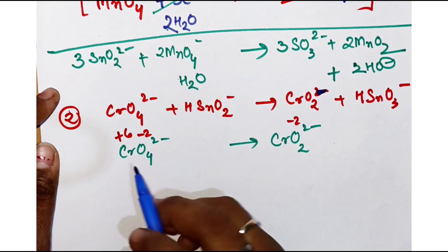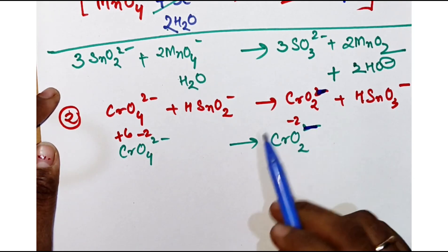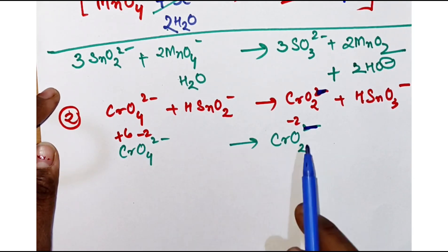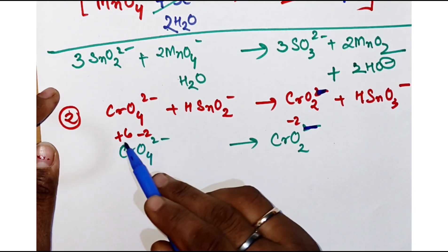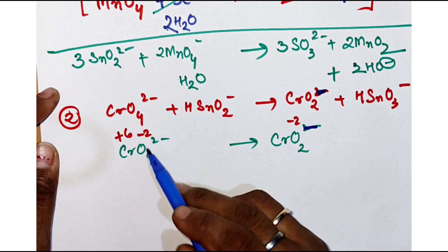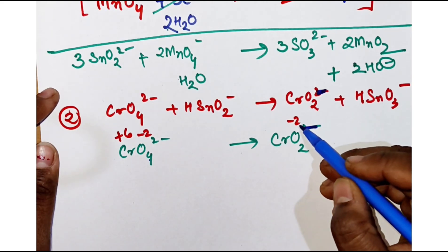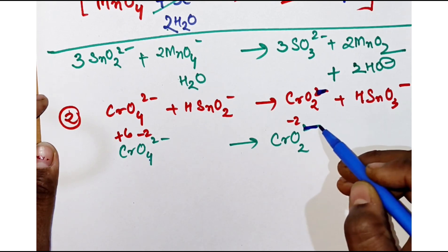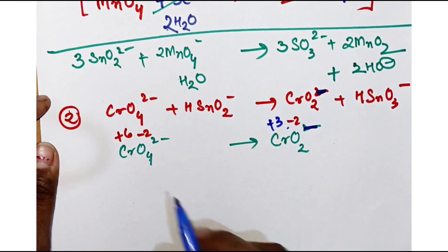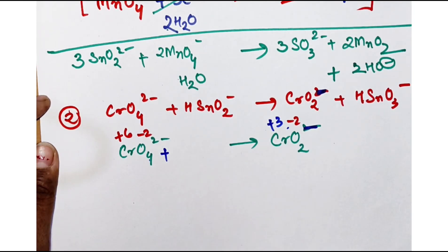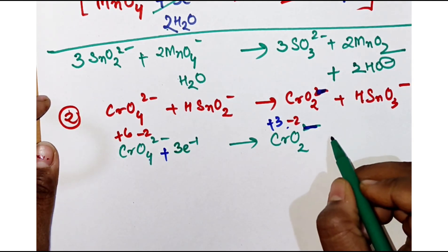Now we go to the second equation: CrO₄²⁻ giving CrO₂⁻. Finding oxidation numbers — two twos are four, eight minus two gives plus six for chromium in CrO₄²⁻. For CrO₂⁻: two twos are four minus one gives plus three. So from plus six it is becoming plus three — it has gained three electrons.